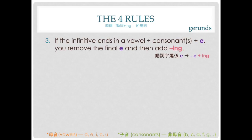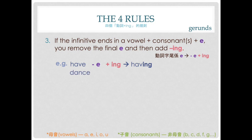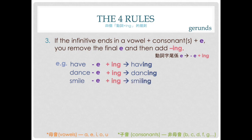Rule number three: if a verb ends in a vowel, then a consonant, plus an e — in other words, if you see e at the end of the verb — you just take away the e and then add -ing. For example, 'have' — you see e at the end, just take away the e, add -ing, it becomes 'having'. 'Dance' — take away e, plus -ing, becomes 'dancing' with no e. 'Smile' — take away e, plus -ing, becomes 'smiling' with no e.